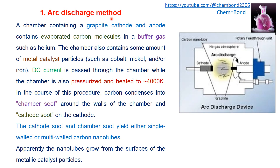The first method is the arc discharge method. A chamber contains a graphite cathode and anode with evaporated carbon molecules in a buffer gas such as helium. The chamber also contains metal catalyst particles such as cobalt, nickel, and iron. A DC current is passed through the chamber while it is pressurized and heated to 4000 Kelvin.